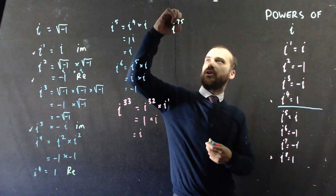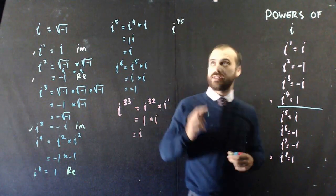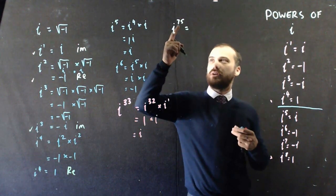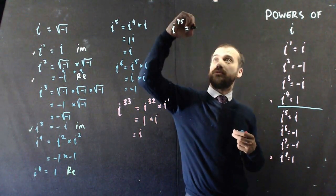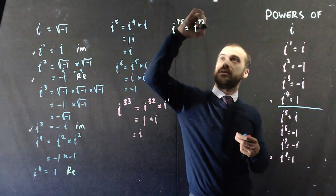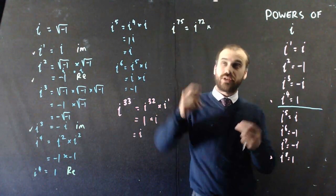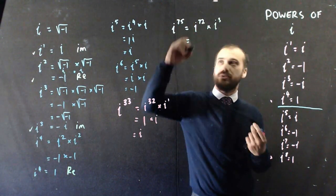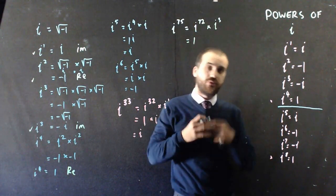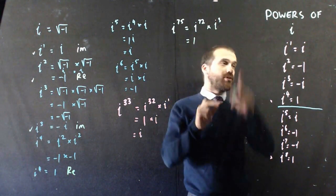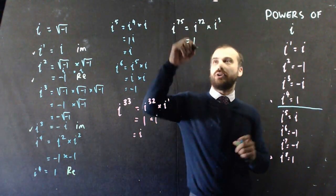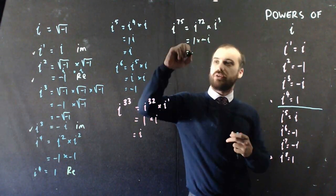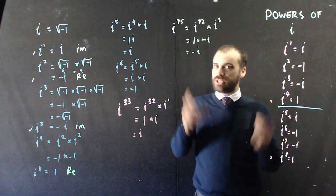i to the 75. All right. i to the 75. I can break that up, because I know that 72 is a multiple of 4. So, I can say i to the 72 times, now what's left over? i to the 3. Well, i to the 72 is just 1, because anything with a multiple of 4 is going to be 1. And i to the 3 is negative i. So, 1 times negative i is negative i. All right. That's some magic. There's some pretty cool things that happen here.